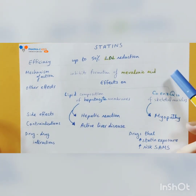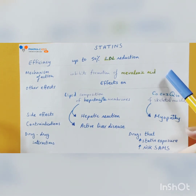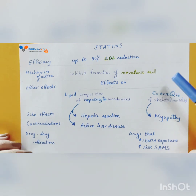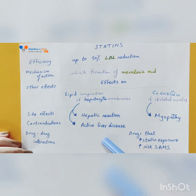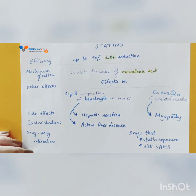Statins inhibit the formation of the precursor or the rate-limiting step of cholesterol synthesis by inhibiting its formation from glucose and fats. To the side effects, contraindications, and drug interactions — we can go through them directly, but it becomes much easier when we understand the mechanism first. We will give brief titles and then go into details.